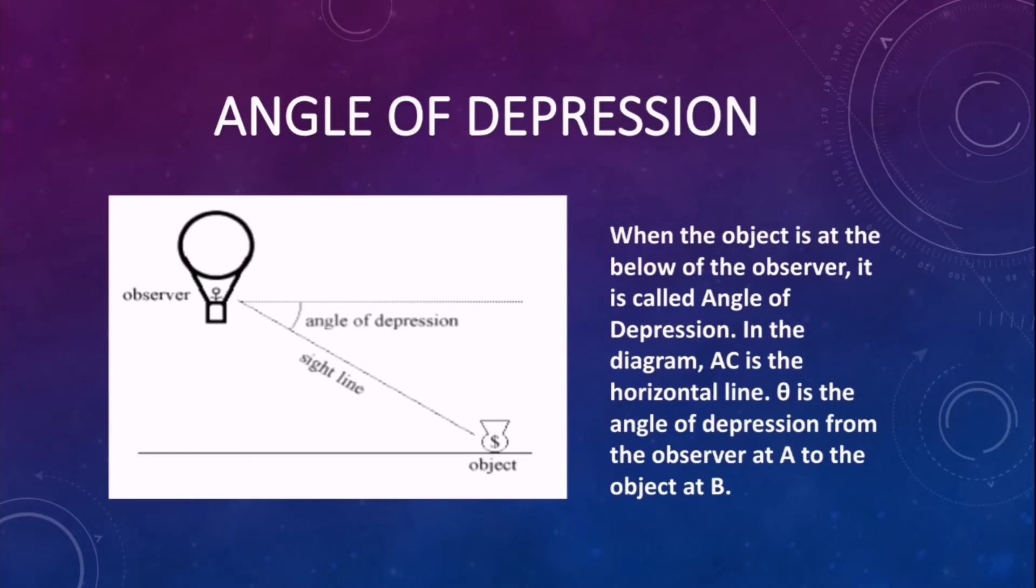Let us have this example. When you as the observer are in a hot air balloon, the object is below the observer represented by the dollar symbol. The observer is from above, so the angle formed is the angle of depression. In the diagram, AC is the horizontal line, theta is the angle of depression from the observer at A to the object at B.